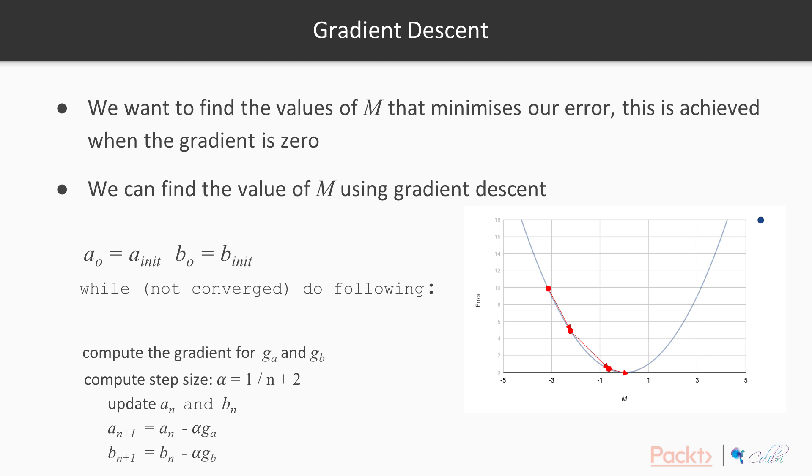we'll then compute a step size, don't worry too much about that right now, and we will then update a and b. And what this update step is, we have our initial value where we were before, we then subtract the gradient times a multiplier value. Now, that might have been a bit overwhelming for you, but let's look over at this graph.